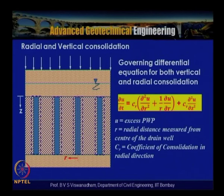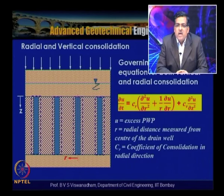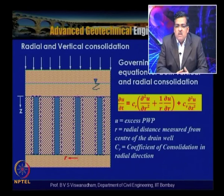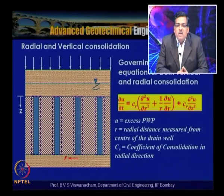Consider a soft clay strengthened with vertical drains, shown as blue columns representing sand-filled drains with certain discharge capacity. At each level, radial drainage takes place as well as vertical drainage depending on whether it is a double or single drainage layer. In the case of sand drains, there is a zone called the smear zone (shown as a broken line) which can occur when sand drains are installed with a closed pipe in soft clay.